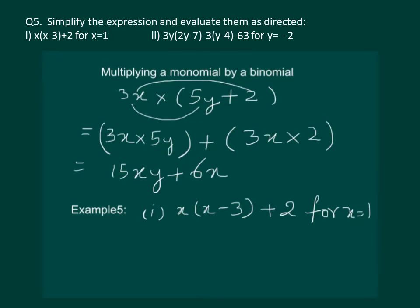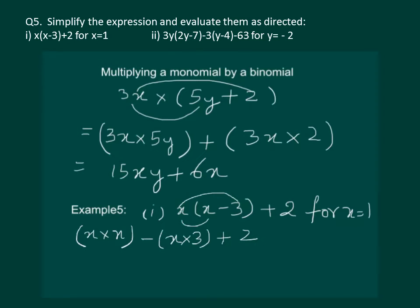Let us start by solving the question. We will multiply x with x and then x with 3. x multiplied by x minus, since it is in the bracket, x multiplied by 3, plus 2. This gives us x squared minus 3x plus 2.